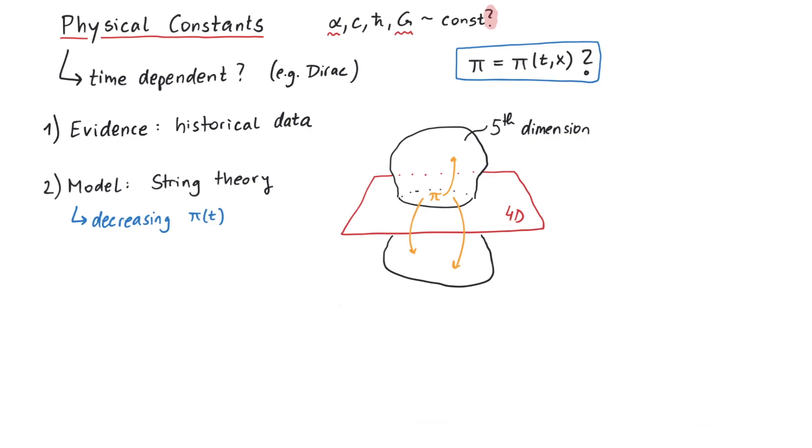Now you might have noticed that the experimental data suggests an increase of pi, whereas the theoretical model predicts a decrease of pi. But since this theoretical model is obviously correct, this discrepancy must lie in over 4000 years of systematic errors.